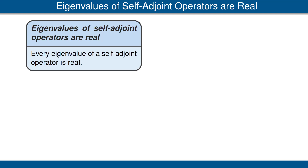Here is our first result that deepens that analogy: every eigenvalue of a self-adjoint operator is real. This theorem says something interesting only in the case of complex inner product spaces, because on a real vector space every eigenvalue, by definition, is real.